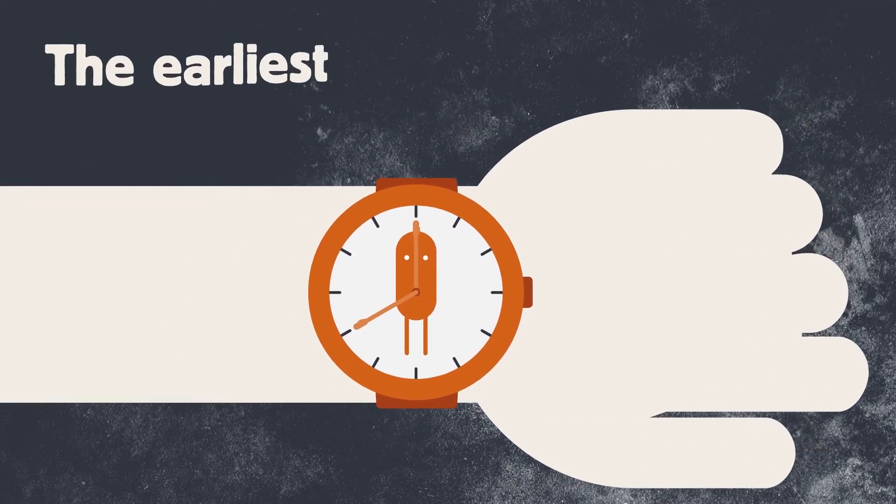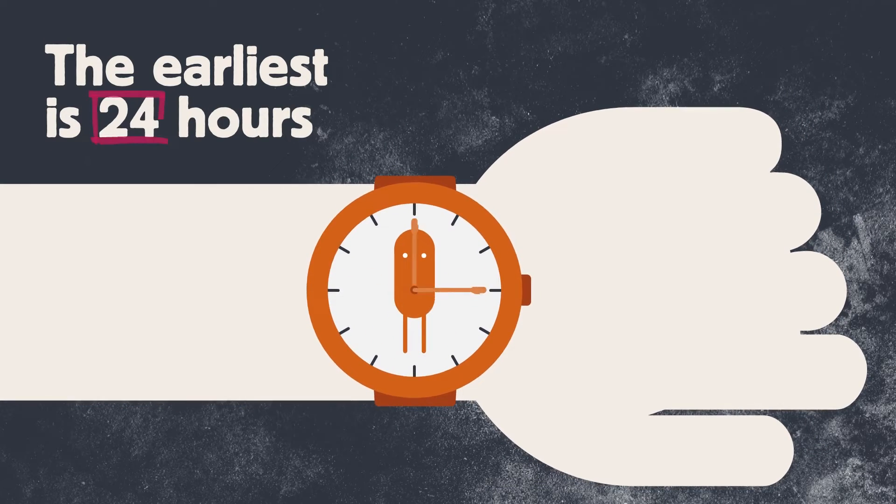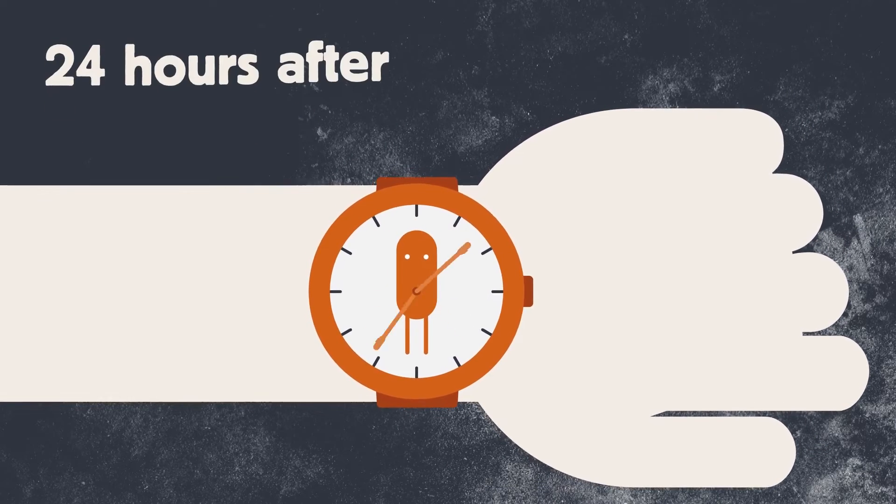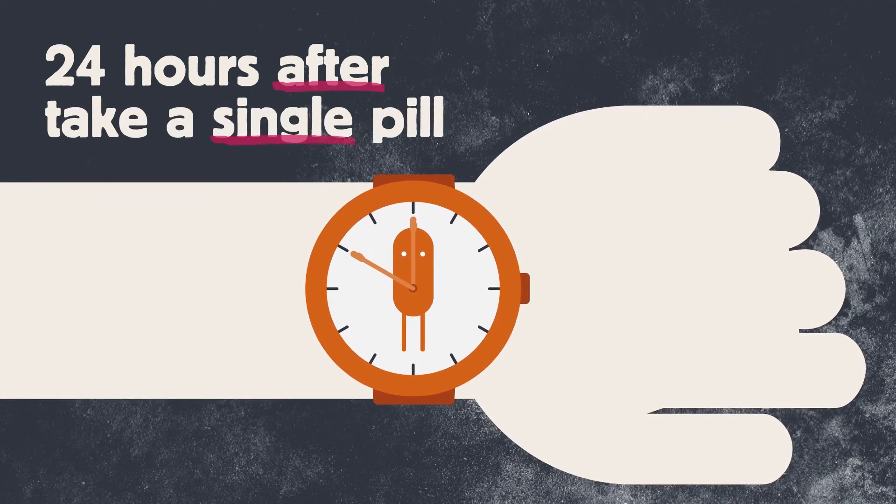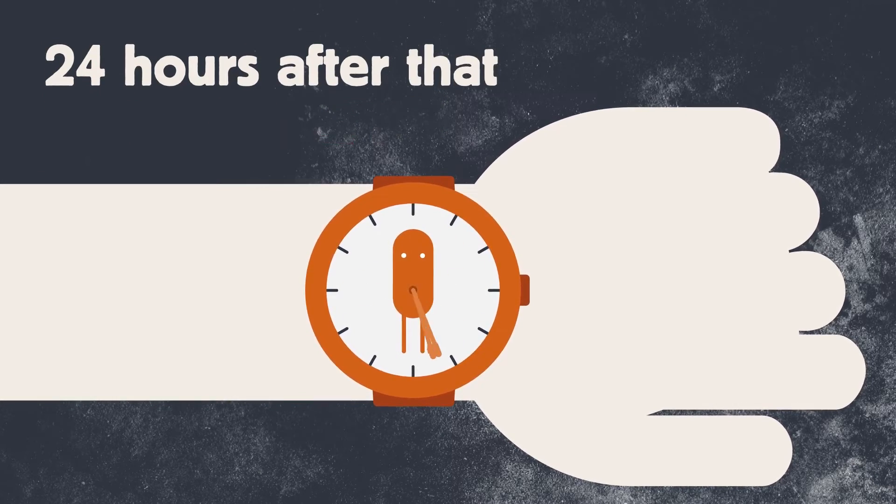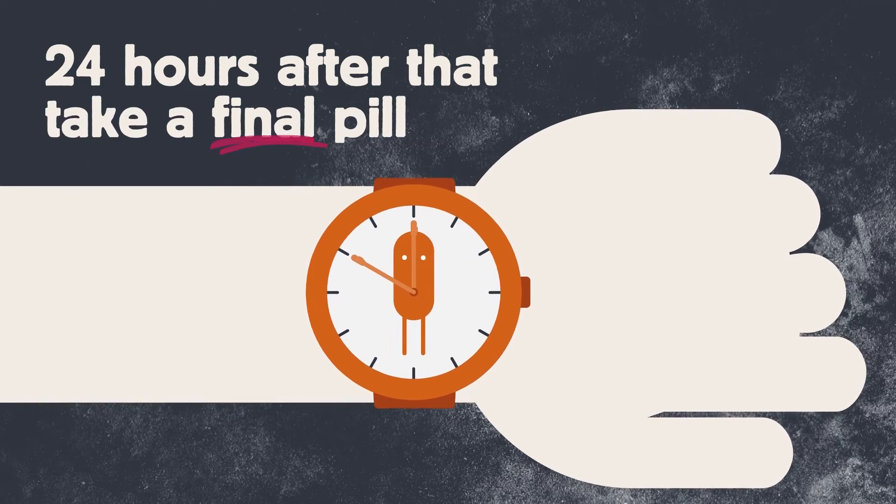The earliest you can take the double dose is 24 hours before sex. 24 hours after you took your two pills, take a single PrEP pill. Then 24 hours after that, you take another final PrEP pill.